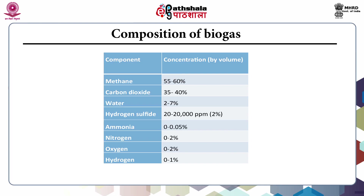This table provides the composition of biogas: methane comprises 55 to 60%, carbon dioxide 40%, water 2 to 7%, hydrogen sulphide, nitrogen, and oxygen in the range of 2%, ammonia 0.05%, and hydrogen around 1%.